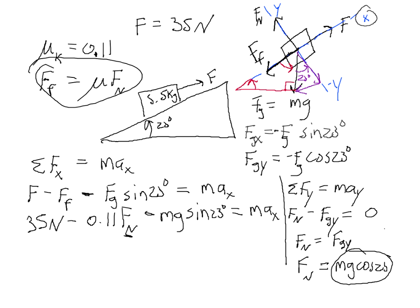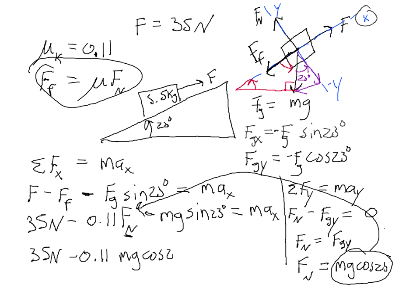We take Mg cosine 23 and plug it in for the normal force. That gives us: 35 Newtons minus 0.11 times Mg cosine 23, minus Mg sine 23, equals M times ax. Plugging in 5.5 kilograms for mass and 9.8 meters per second squared for gravity, we solve for ax, and that gives us an acceleration in the x direction of 1.54 meters per second squared.